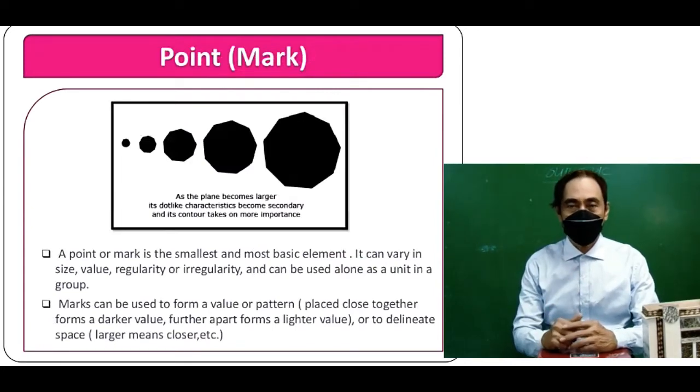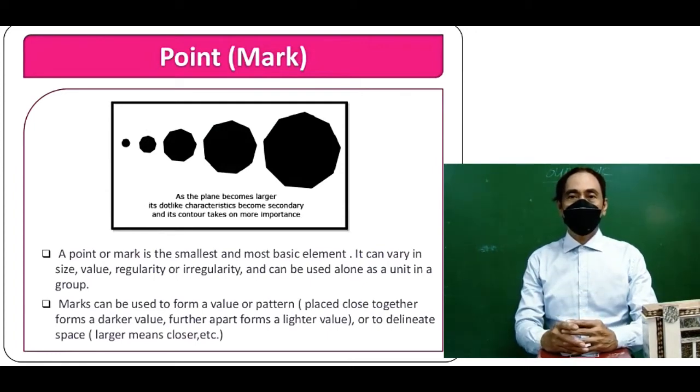A point or mark is the smallest and most basic element. It can vary in size, value, regularity or irregularity, and can be used alone as a unit or in a group.